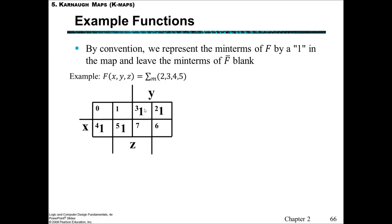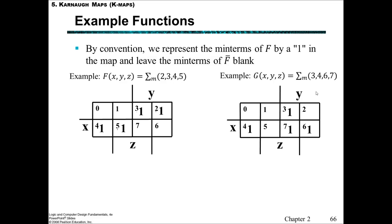An example: for minterms 2, 3, 4, 5 — remembering these are the indexes — we write ones in those squares and don't write anything in the others. Here's another example for minterms 3, 4, 6, 7: so 3, 4, 6, and 7 all have ones in them; all the others have nothing in them. It's really important that you learn where these indices are. As a reminder, between consecutive rows or columns, only one bit is changing, and then you can work out what that number is.